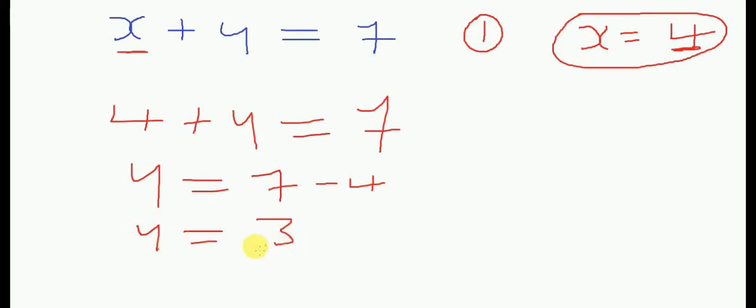Y equals 3. 4 from 7 is 3. The answer for Y is 3. When X equals 4, Y equals 3.